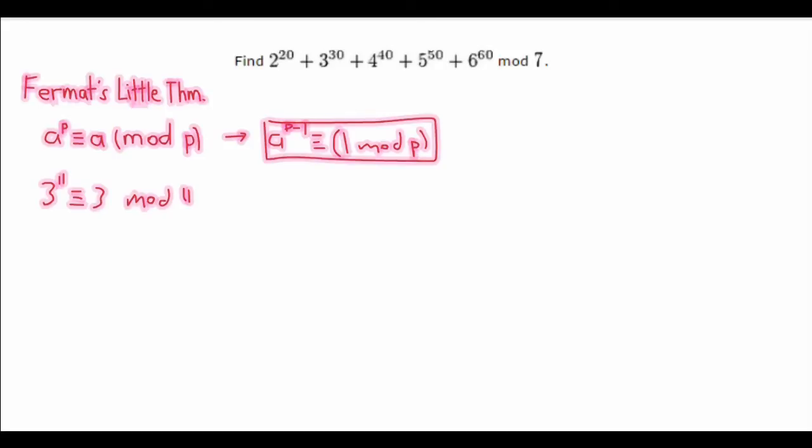So, we can see that we are taking this thing mod 7. So, a good choice for p is p equals 7. When we do that, we can see that a to the power of 6 is congruent to 1 mod 7. So, let's first look at the first part, 2 to the power of 20.